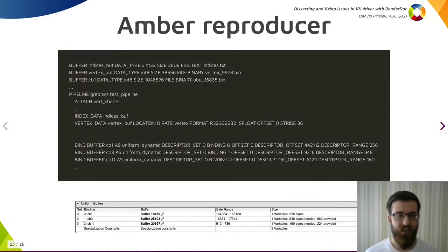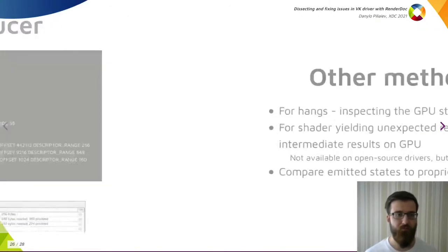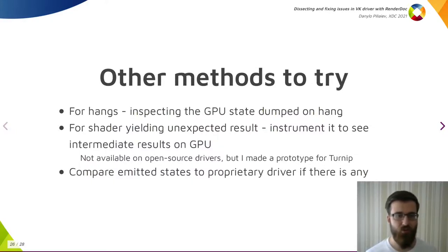To create a piglit test, I saved every buffer the draw call used, and bound them with slots, offsets, and ranges I saw in RenderDoc. It is a bit tedious, but easy to do. Aside from good old intuition, there are many more things to try. For hangs, you could inspect the GPU state which is dumped on a hang. Its usefulness varies between the kernel and GPU vendor, but you could try. For shader yielding an unexpected result, it could be possible to instrument it and see what is really happening on GPU. That's not something that's available on open source drivers, though I recently made a prototype for Turnip, which I successfully used a couple of times. Another method to try is to compare the states emitted between your driver and the proprietary one, if there is any, and it does the work correctly.